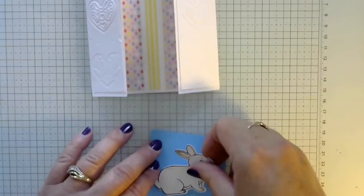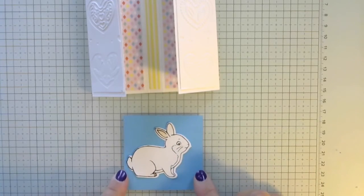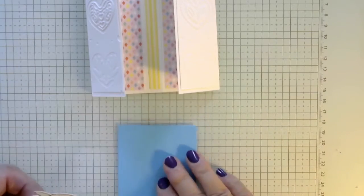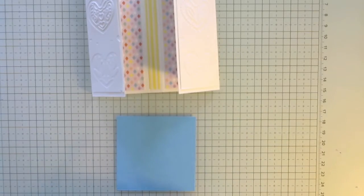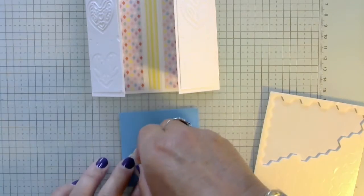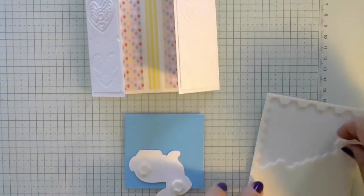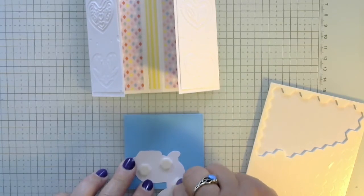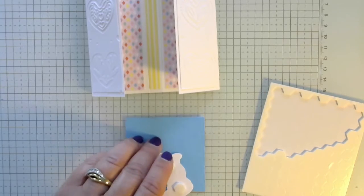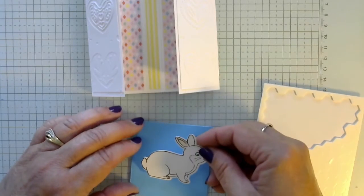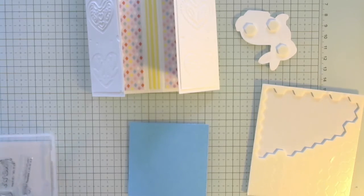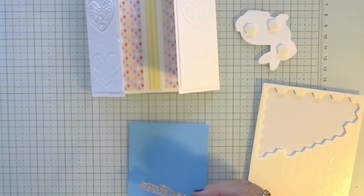And then we're going to pop him up on dimensionals. And this piece is azure blue. And it has been die cut with the Stylus Shapes dies. And we'll just pull our dimensionals in here. Put a couple of them on here. Pop him up. Oh, you know, before we put him on there, let's get our Happy Easter on here.